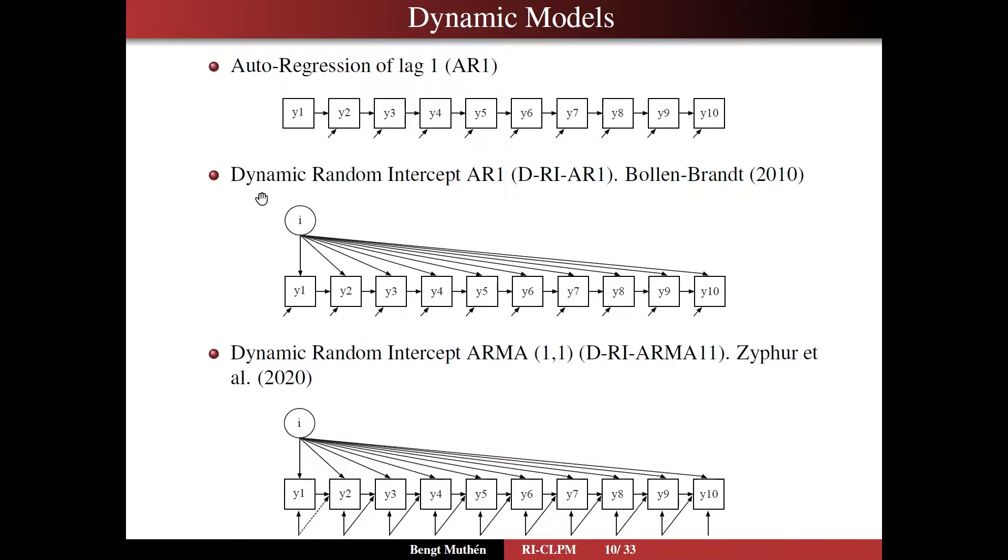Now, there has been efforts to add a random intercept to these kinds of dynamic models. So we have a dynamic random intercept AR1 model, which we're going to label D for dynamic RI-AR1. It has been discussed in the Boland-Brandt article from 2010. So it looks like this. You have the characteristic of regressions among the observed variables, although you have a random intercept as well.